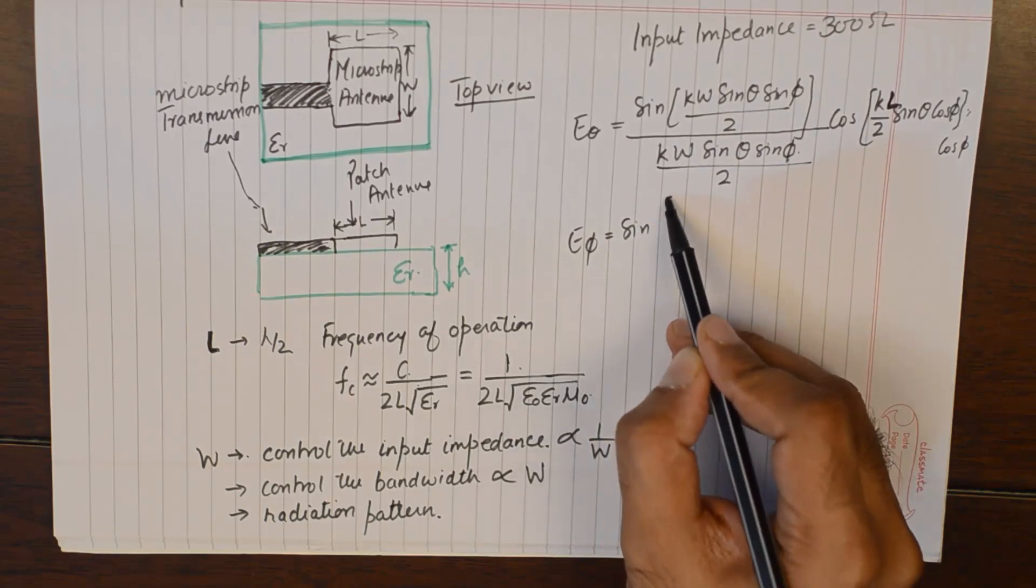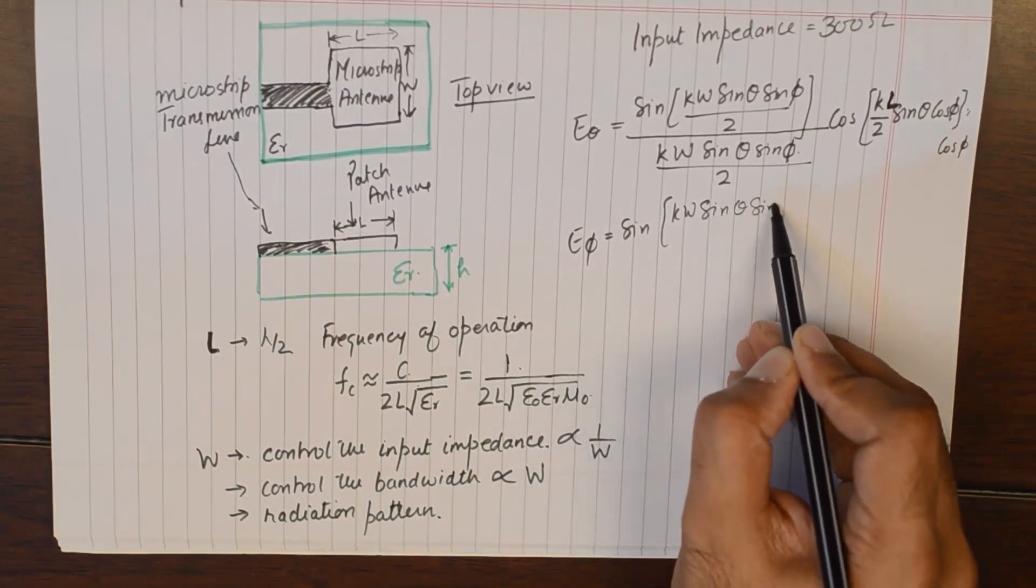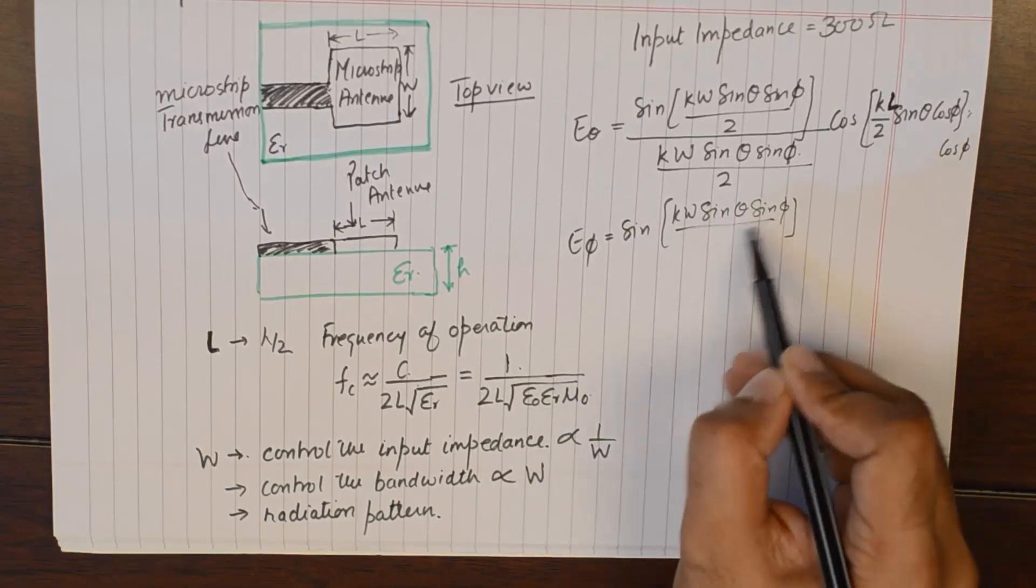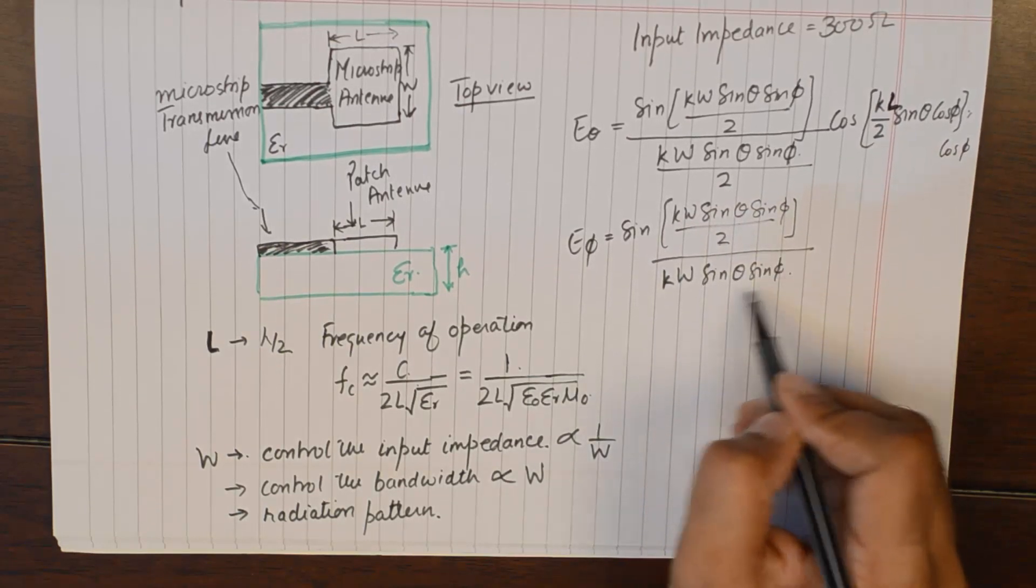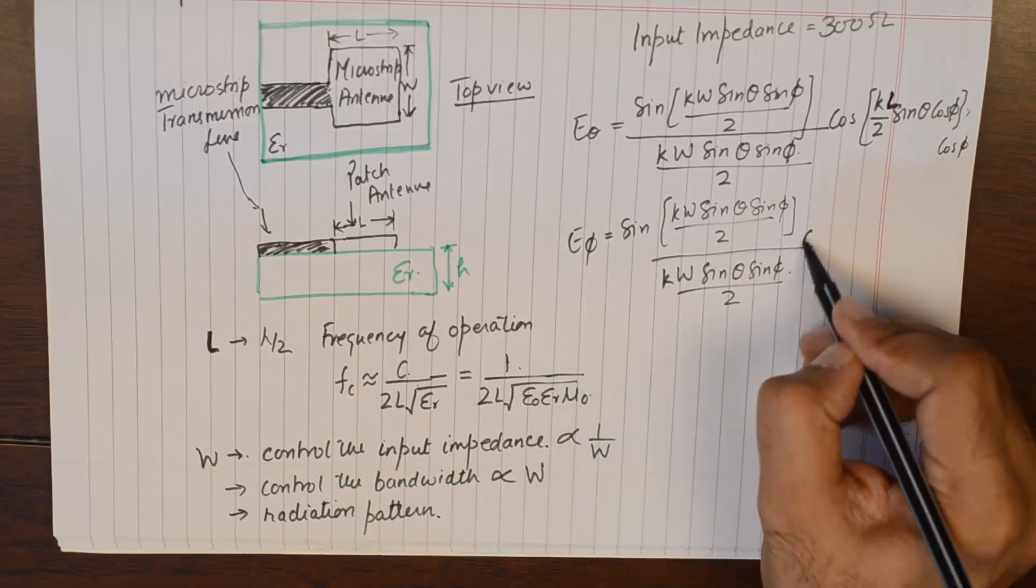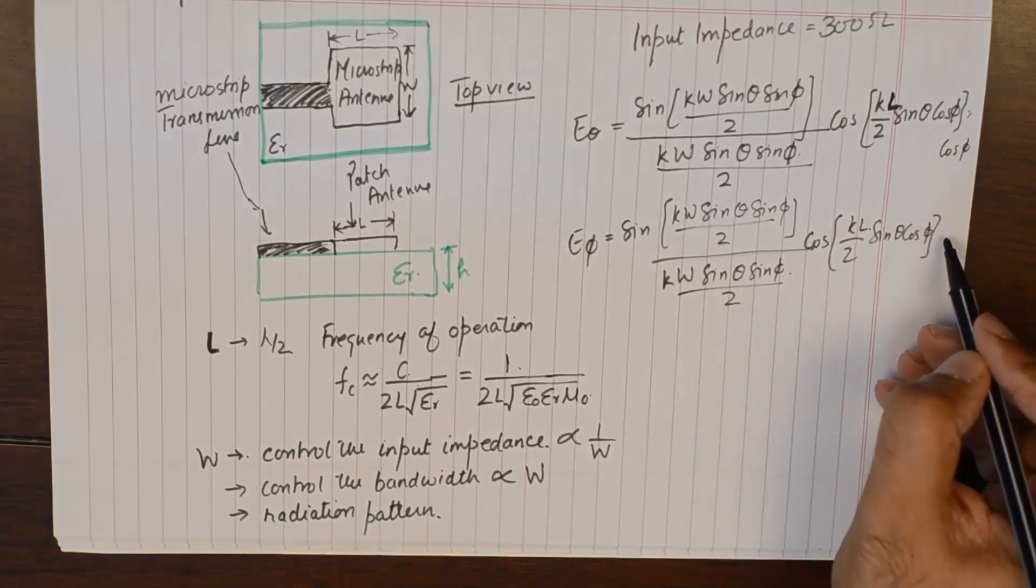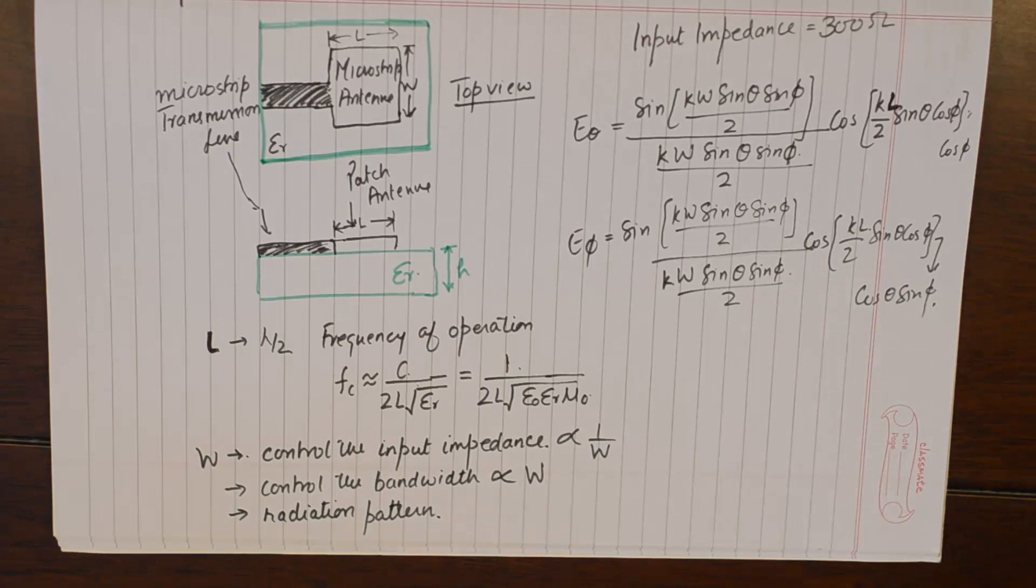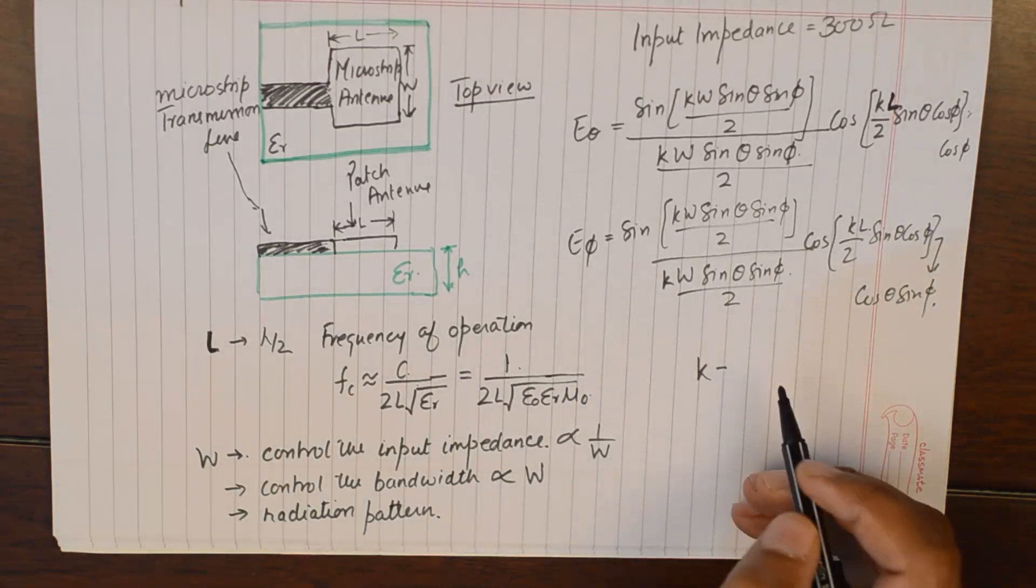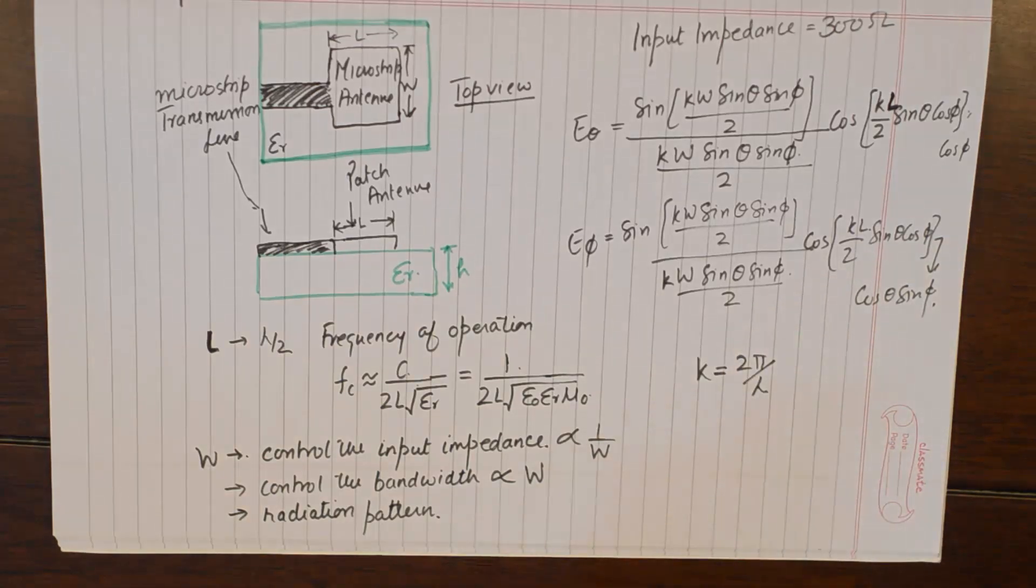I will write down the formula for electric field intensity received at a distant point in spherical coordinate system by the patch antenna. We have a cos theta and sin phi. In the above equation, k represents the free space wave number and it's given by 2 pi by lambda.